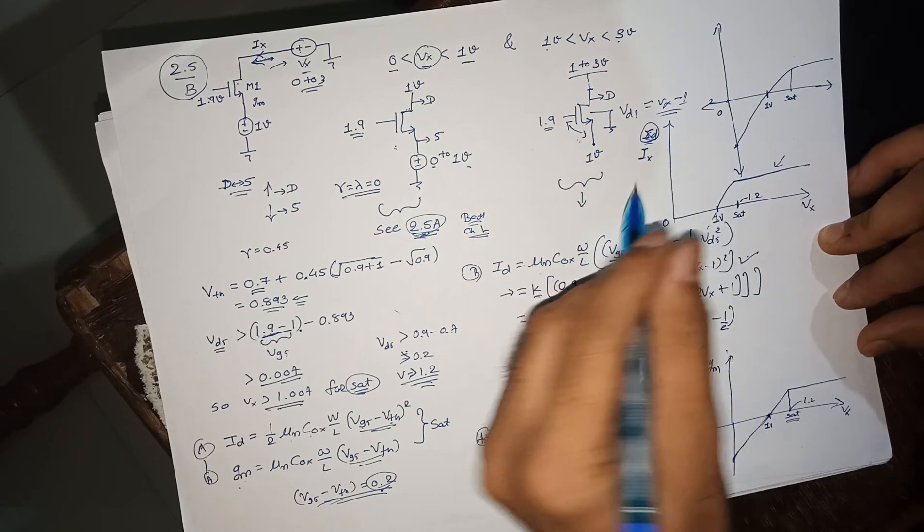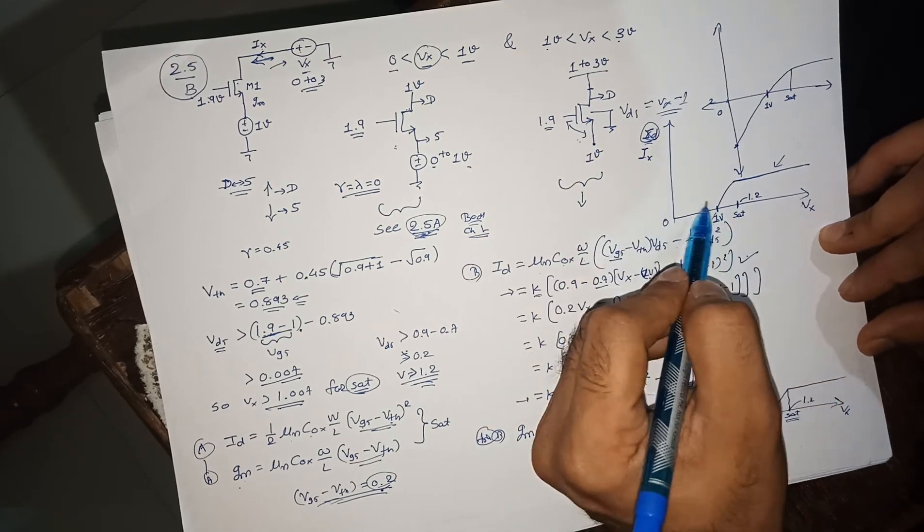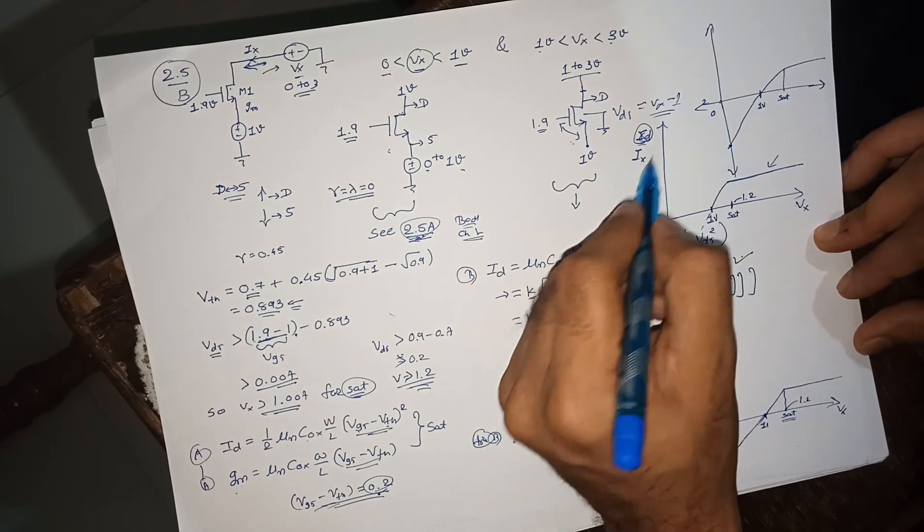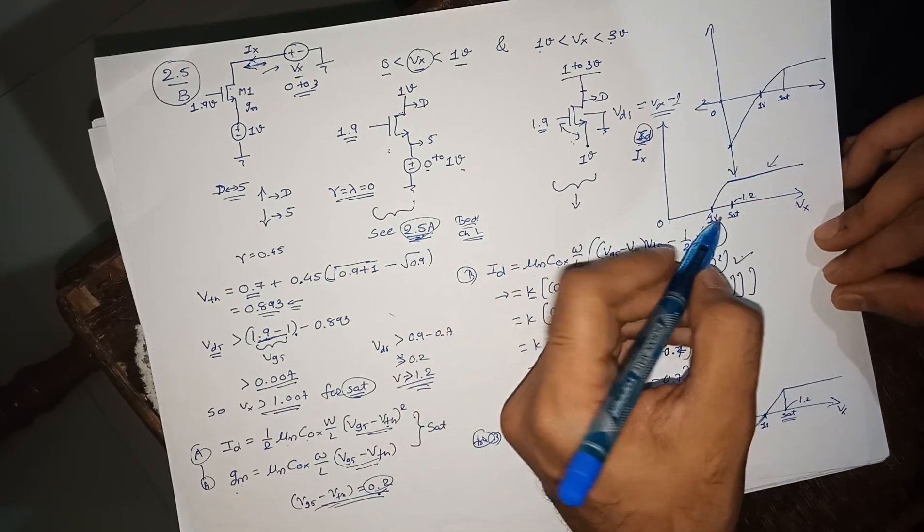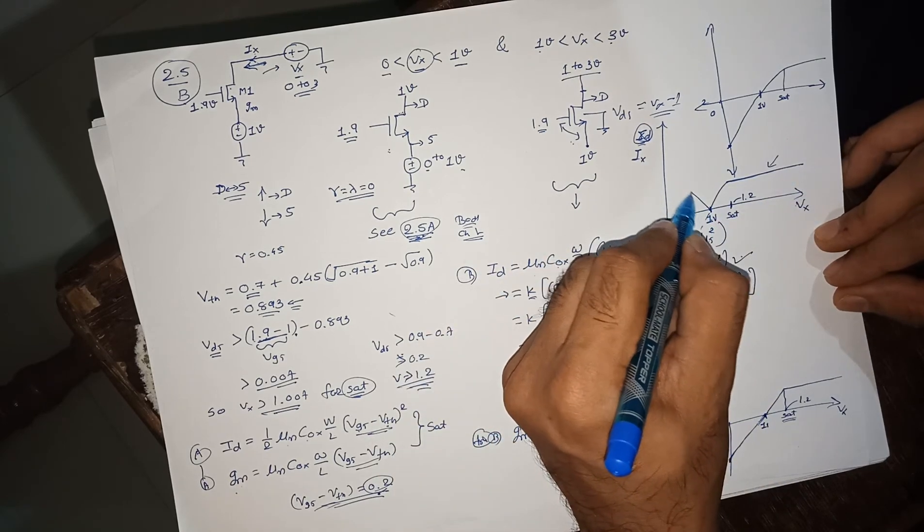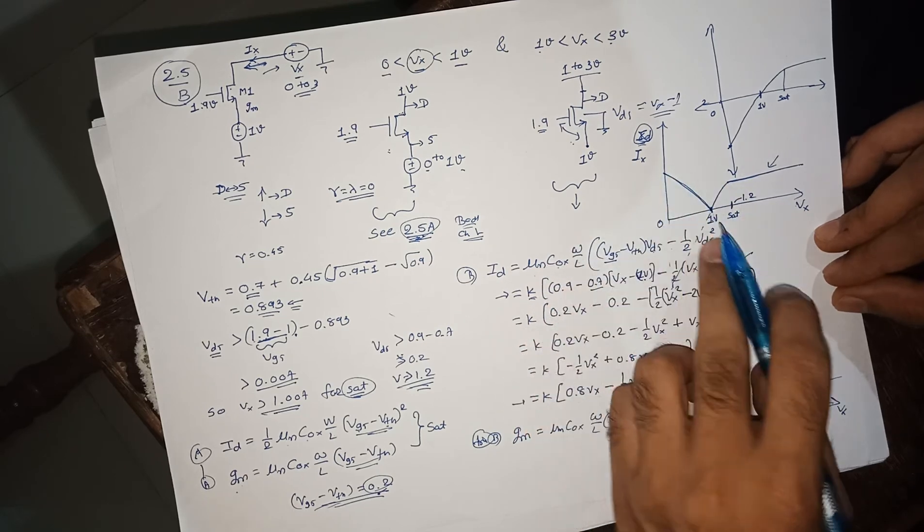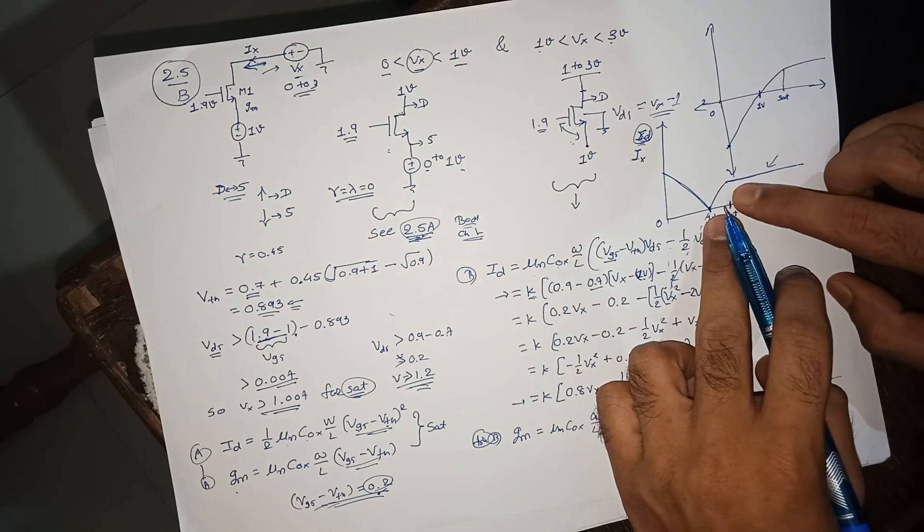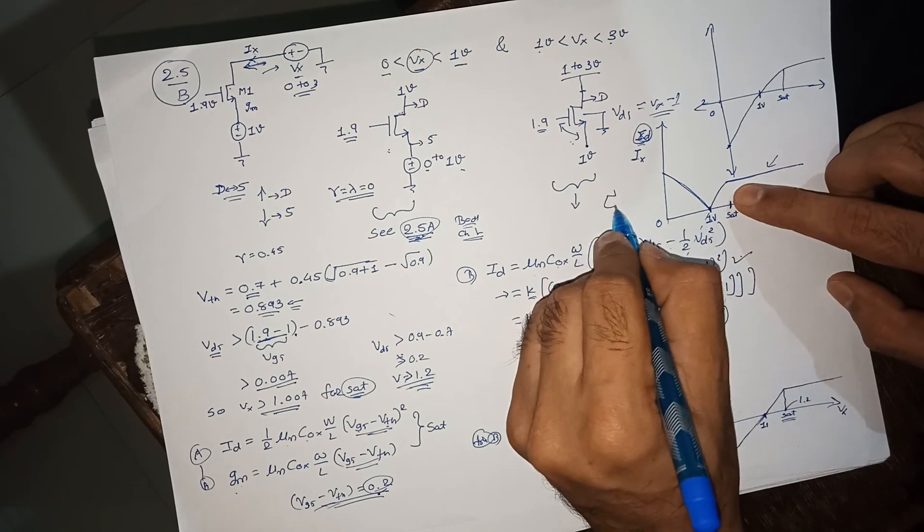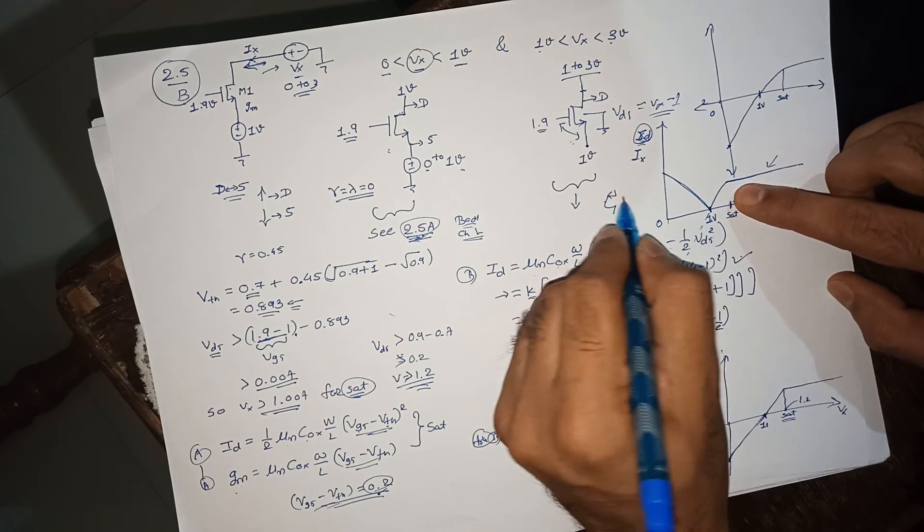I am sorry for that. ID will be actually in positive, so if you are really plotting your ID in Virtuoso or maybe whatever software, it will become like this. Don't be surprised if you are simulating this, because ID will be always positive.